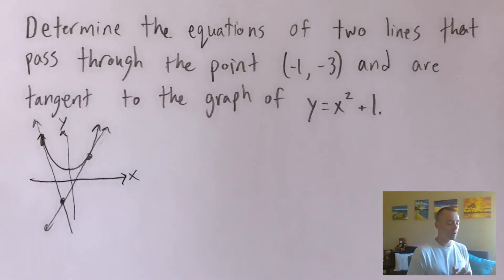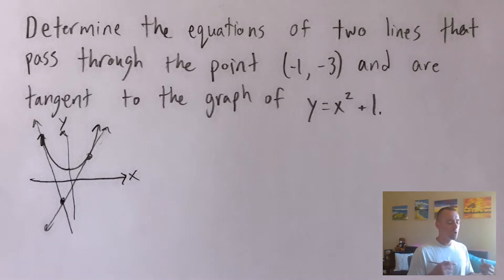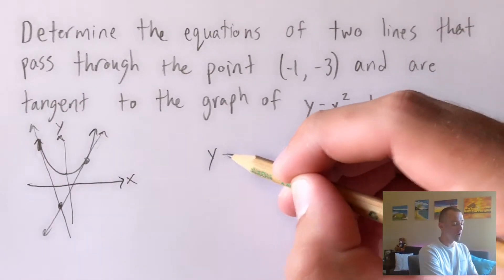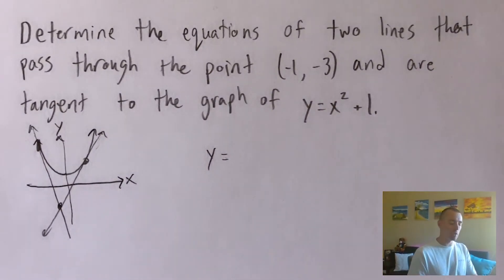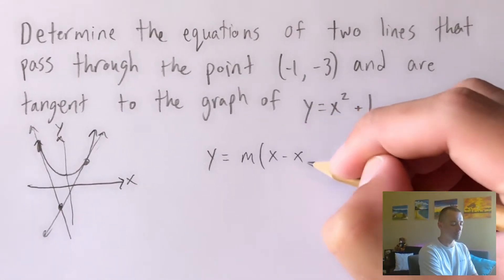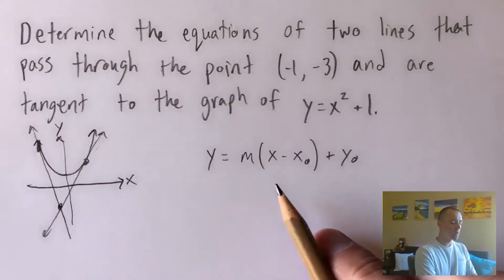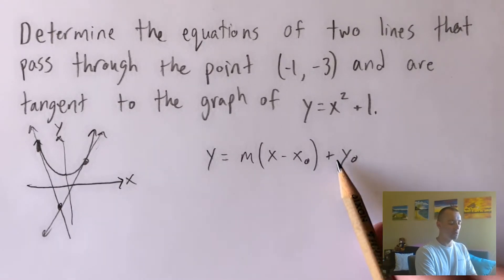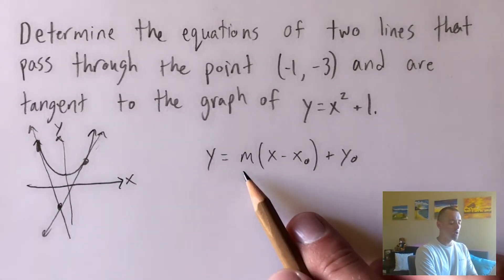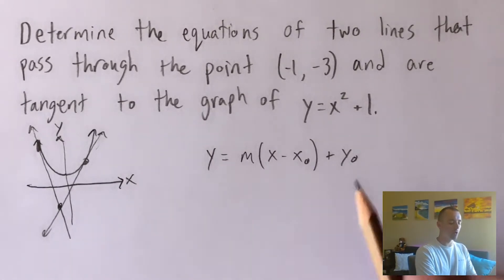So how do we do that? It's going to be a similar process to what we would have to do if we were given a point that's actually on the function. What you want to keep in mind is that we're trying to find a tangent line, which means our answer should be the equation of a line. So let's go ahead and just start with the generic equation of a line.